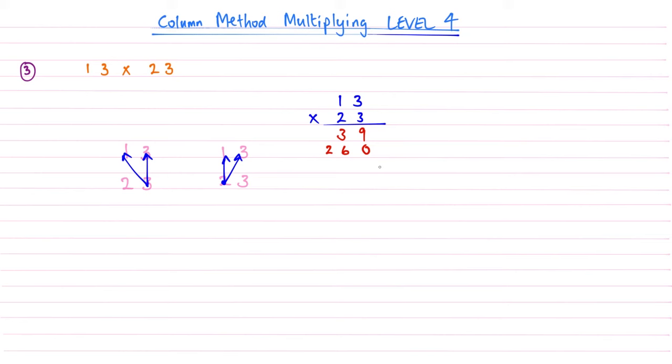And then all we're going to do now is add these two numbers up, the two red numbers. So 9 add nothing is nothing. 3 add 6 is 9. And then 2. So the answer to that one is 299.